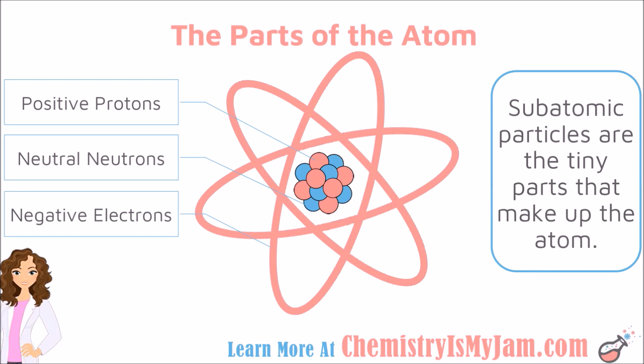Here we have a simplified model of the atom that I am going to use to try to tell you, in general, where things are located. You can see that there is a nucleus in the center of the atom. This is a tightly packed, super-dense portion of the atom. It contains protons that have a positive charge and neutrons that have a neutral charge, or no charge.